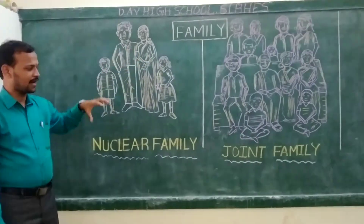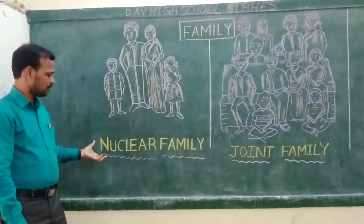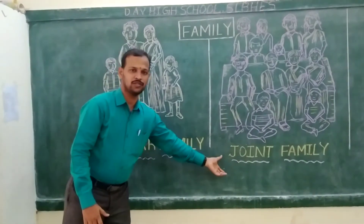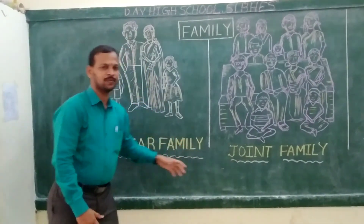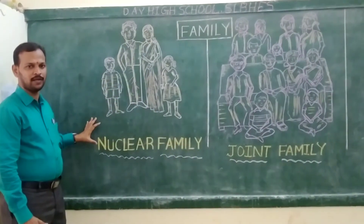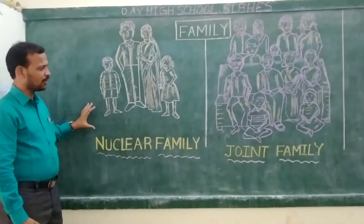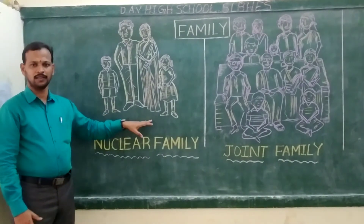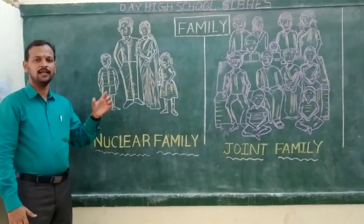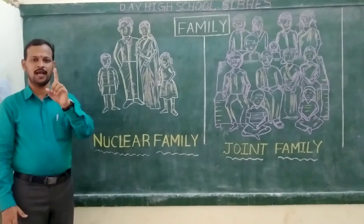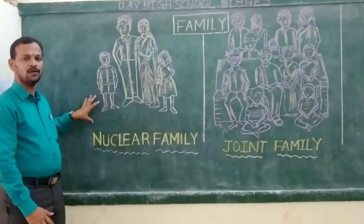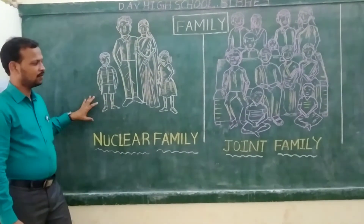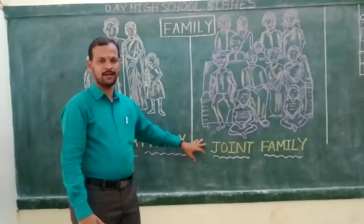Family can be categorized into two types. The first one is nuclear family; the second one is joint family. Nuclear family means father, mother, and the children living together as a unit. This is called nuclear family.